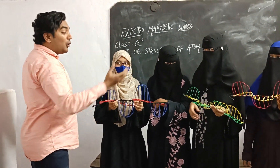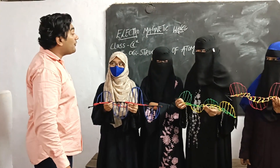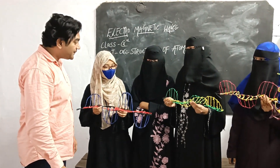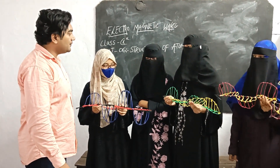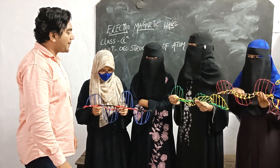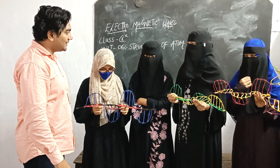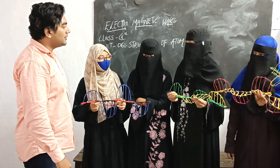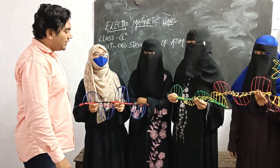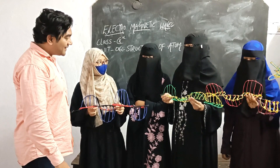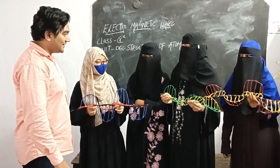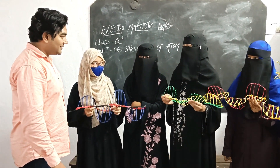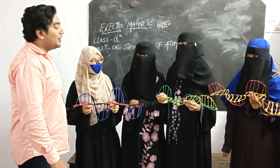Can you tell what is the speed of electromagnetic waves? Visible light is an electromagnetic wave with speed 3 into 10 to the power of 8 meters per second. Very nice. Electromagnetic waves are characterized by wavelength and frequency.